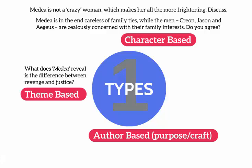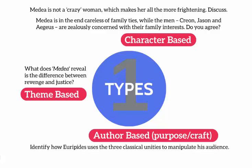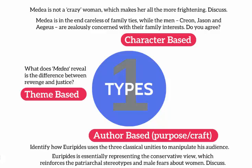The other type of question you might get is an author-based question. This relates specifically to the way the author has constructed the piece or what message the author wants to get across to the audience. For example: 'Identify how Euripides uses the three classical unities to manipulate his audience.' Basically that's unity of time, place, and plot. That sort of question wants you to look at how he uses these unities to get his audience to feel what they feel and react the way they react. Euripides is essentially representing the conservative view which reinforces patriarchal stereotypes and male fears about women — this is about his purpose in writing the play.